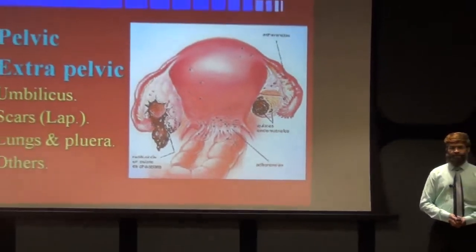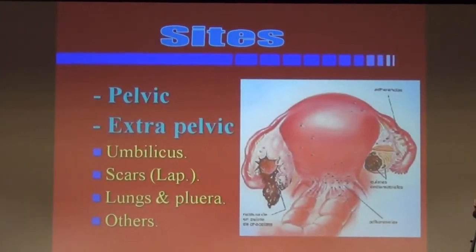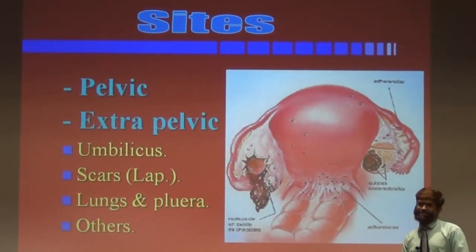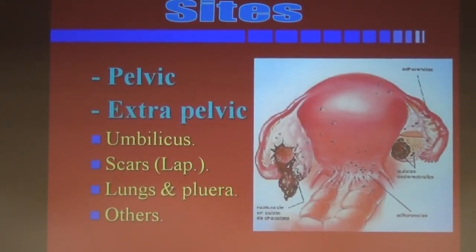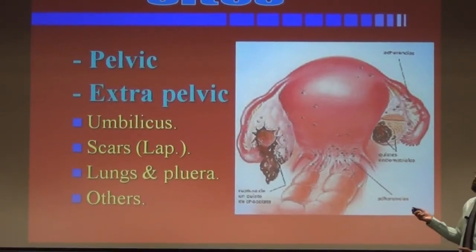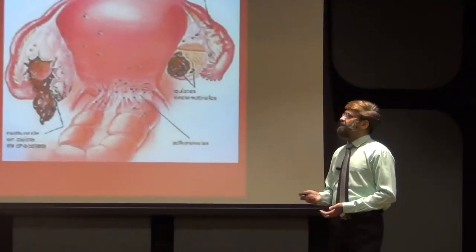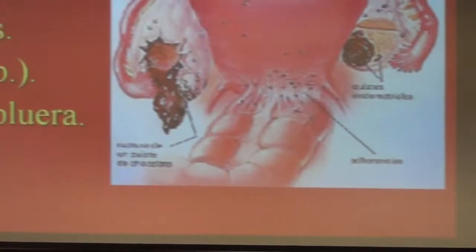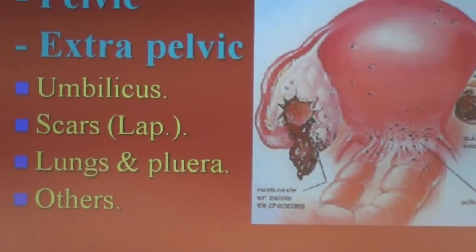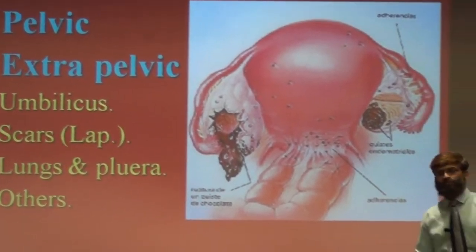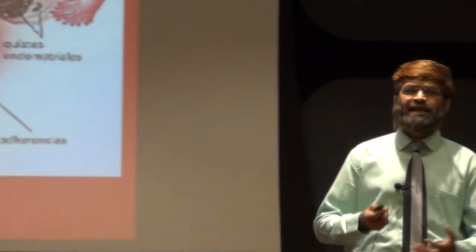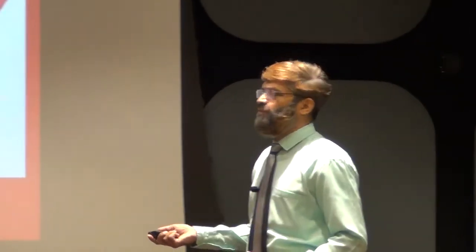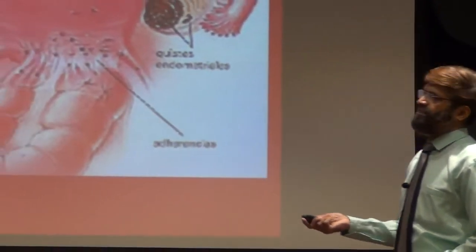Next, the sites depend on whether endometriosis is internal or external. If it is pelvic, we consider it in the pelvic cavity; if extra-pelvic, then outside the pelvic cavity. If extra-pelvic, it may be associated with the umbilical area. Procedures like laparotomy may lead to endometriosis associated with the umbilical area, or with laparotomy scars. Distant organs like lungs and pleura may also get associated.